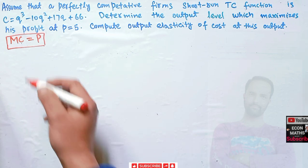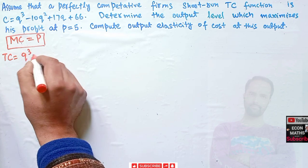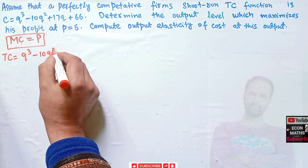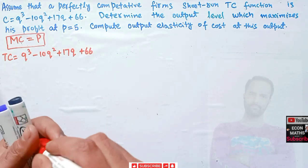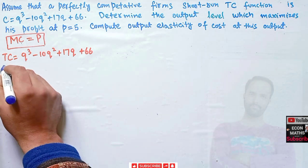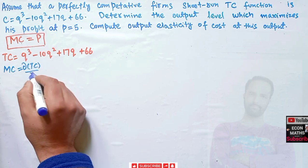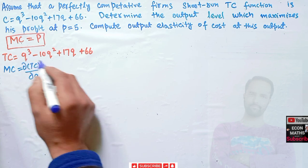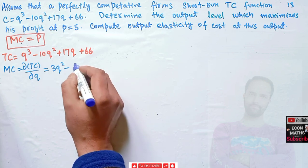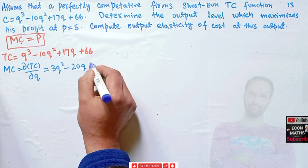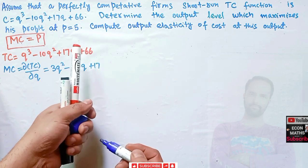Now what is our total cost function? Total cost is given as Q³ - 10Q² + 17Q + 66. Marginal cost is simply the derivative of this total cost with respect to quantity. So the derivative of Q³ is 3Q², minus derivative of 10Q² is 20Q, plus 17, and the derivative of the constant 66 is 0.